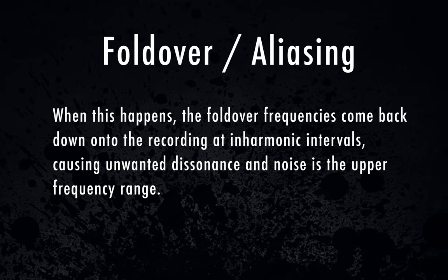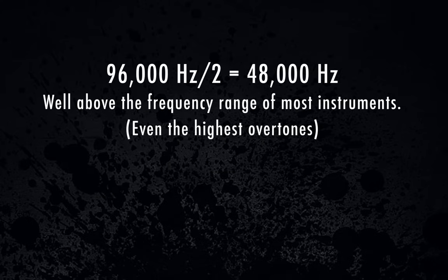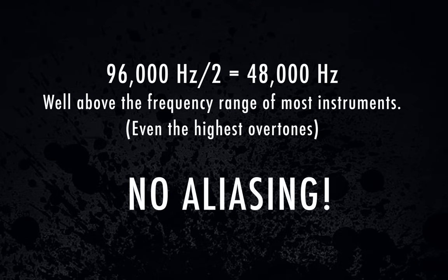For example, if we use a sample rate of 96k, divide 96,000 in half and you get 48,000 Hz. So the highest frequency that 96k can reproduce is 48,000 Hz, which is well above our threshold of human hearing. Even if the flute or piccolo has really high overtones like 25,000 or 30,000 Hz, those overtones are still well below the 48,000 Hz barrier and we won't have to worry about getting aliasing noise.